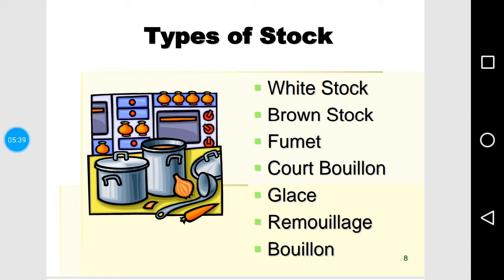Gelatin is a protein present in animal bones that is released into the stock during simmering. When you continue simmering for a long period of time, water evaporates and there is a concentration of gelatin in the liquid. This leads to the formation of a glaze, which is a reduced or thickened stock.